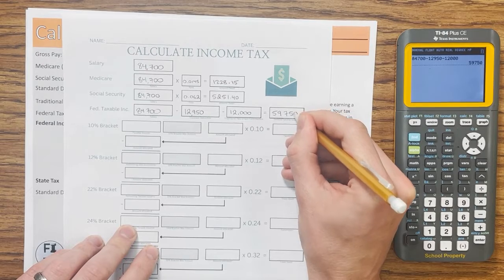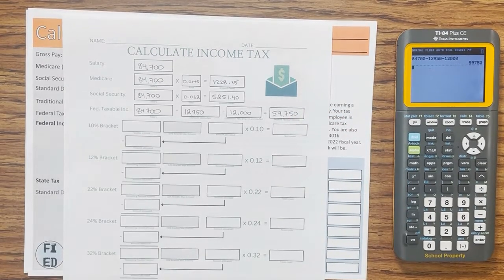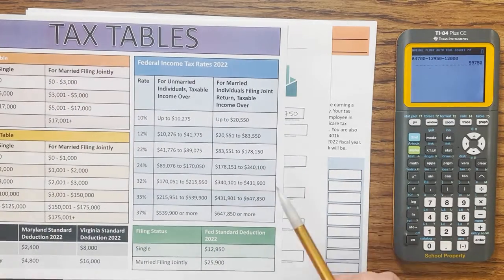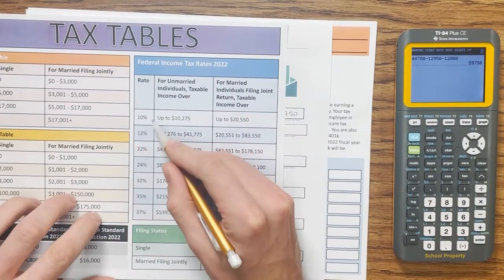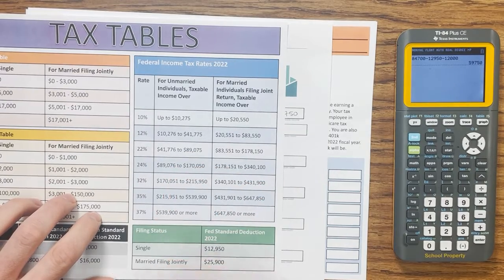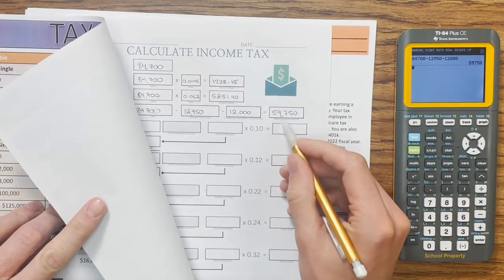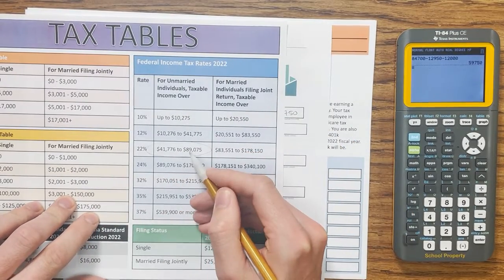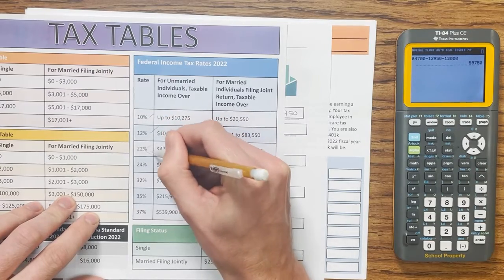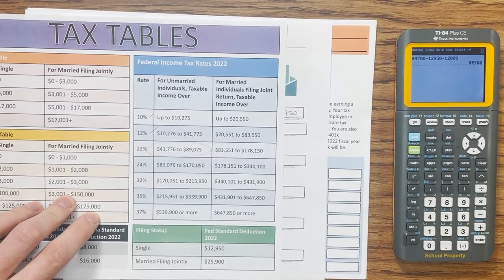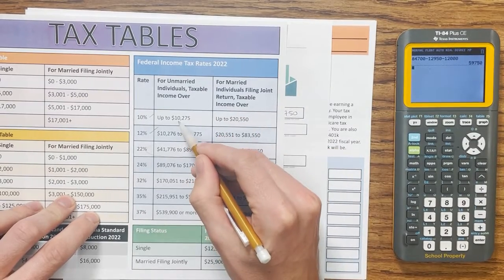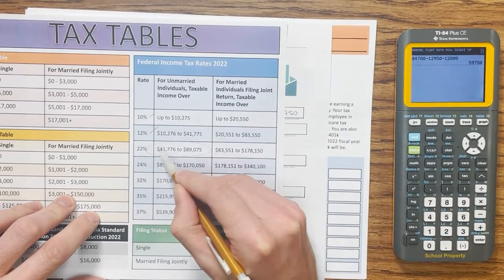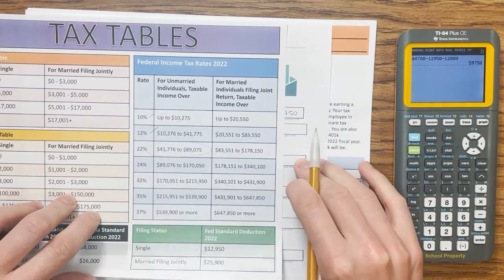Now we move into the tax brackets — take a look at your tax tables. We have one side for state and one side for federal, and federal is what we're going to do first. The different rates are 10%, 12%, 22%, 24%, 32%. Our federal taxable income is $59,750, so it falls in the 22% bracket. We'll fill up the 10%, then the 12%, and then some money goes into the 22% bracket. We'll use our worksheet to help do that.